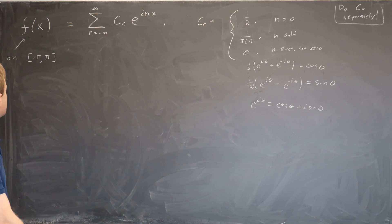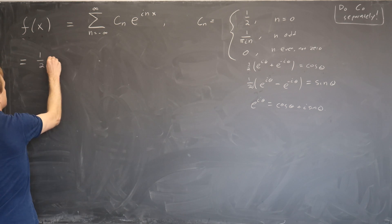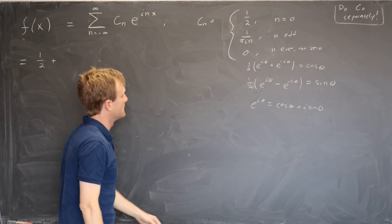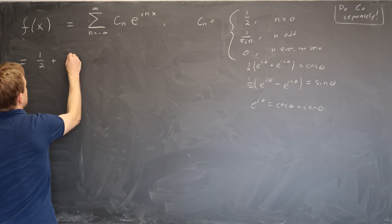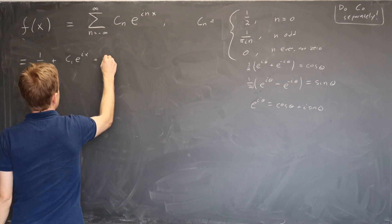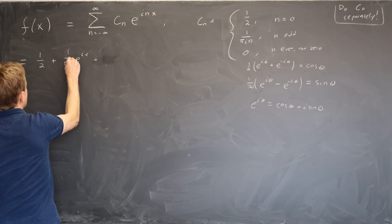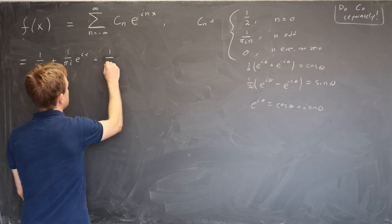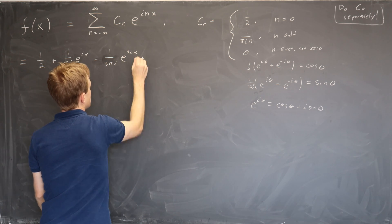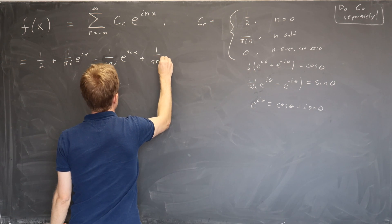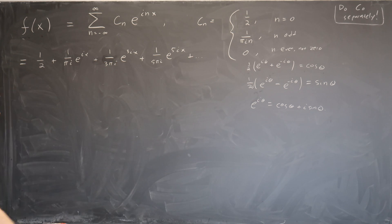Okay so let's put this into action. So the first thing we're going to do is write out terms. So let's start with c_0, that's a half. Now let's do the odd terms next. So the positive n terms: c_1 e to the ix, c_1 is 1 over pi i, and then c_2 is 0, c_3 is 1 over 3 pi i e to the 3ix, c_5 is 1 over 5 pi i e to the 5ix, all the higher odd numbers.